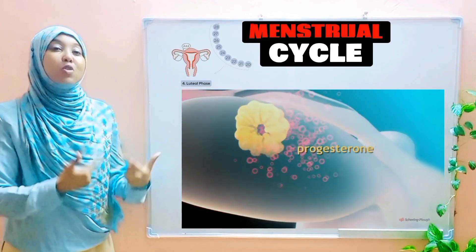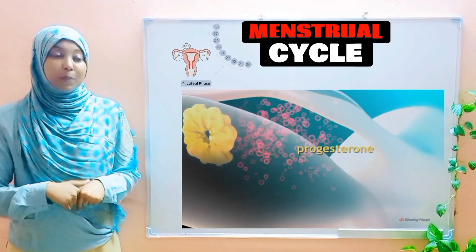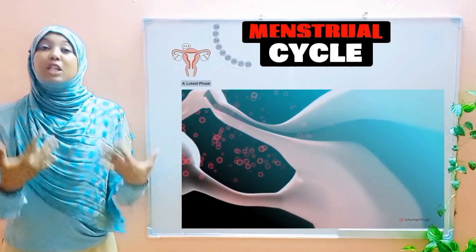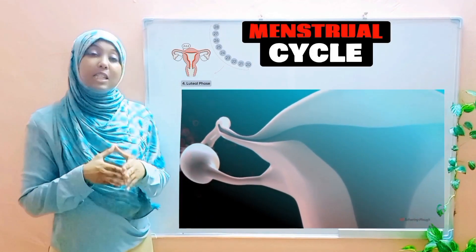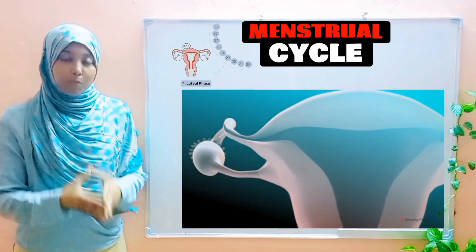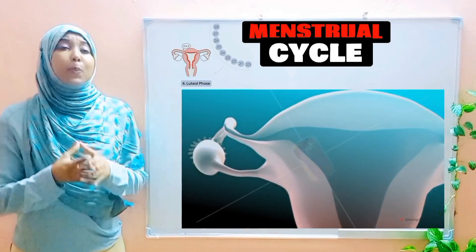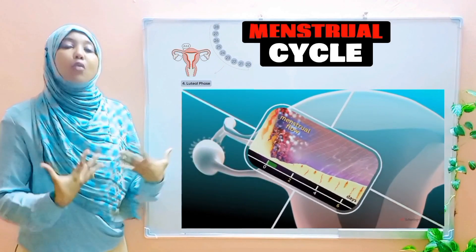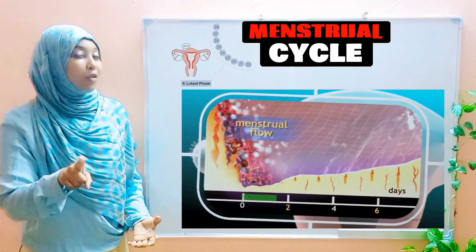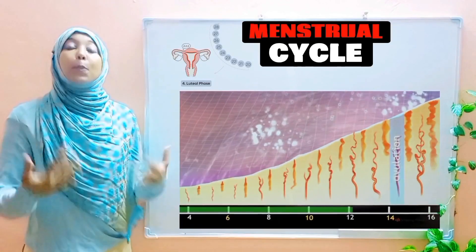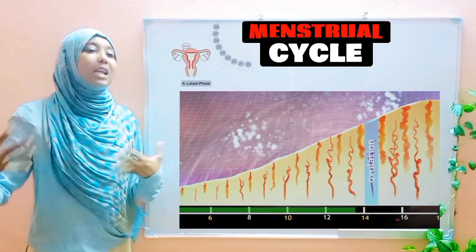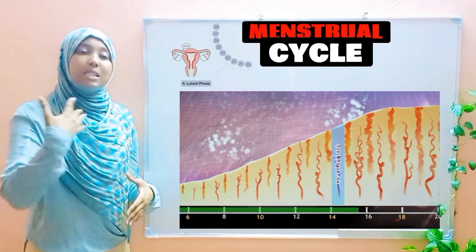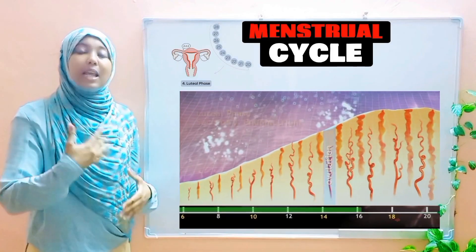The corpus luteum has an important function. It starts secreting progesterone, a very important hormone. Progesterone stimulates the thickening of the endometrium and increases the blood supply at the endometrium in preparation for implantation.